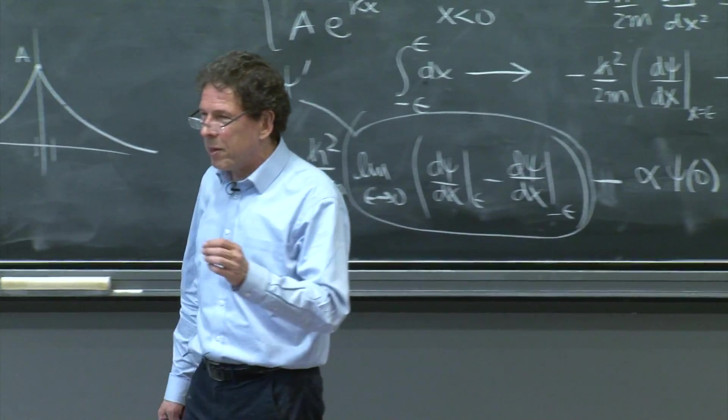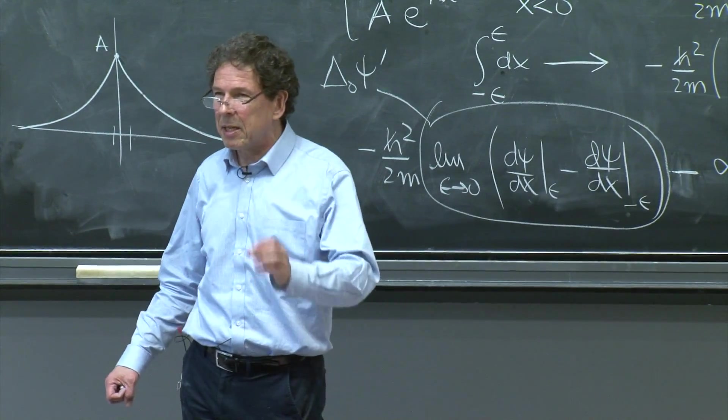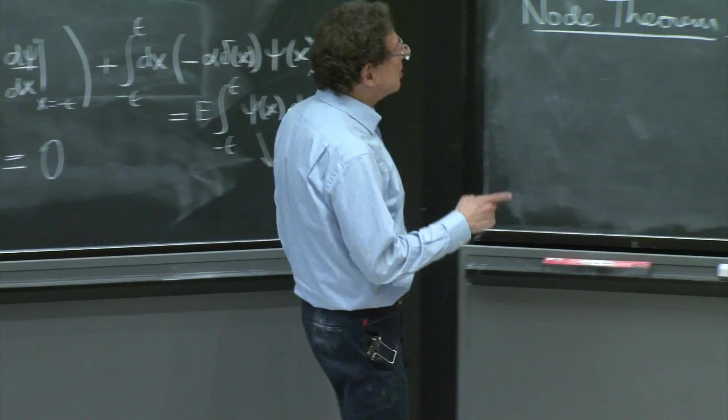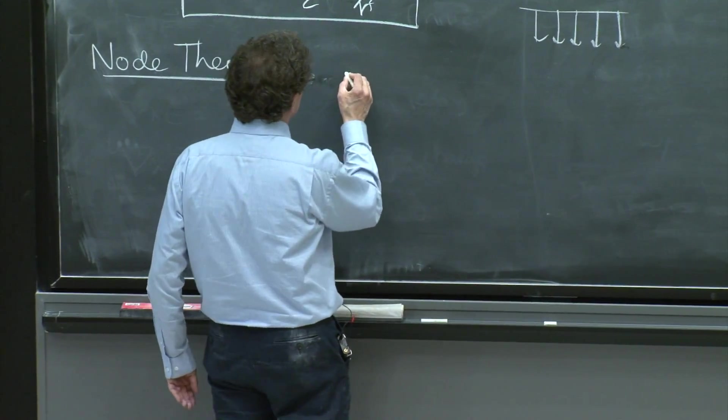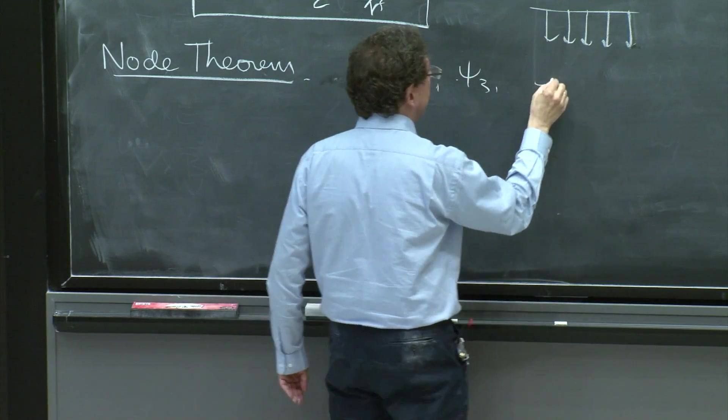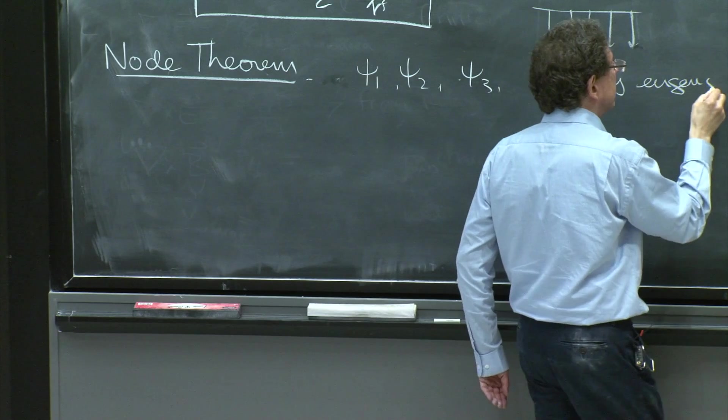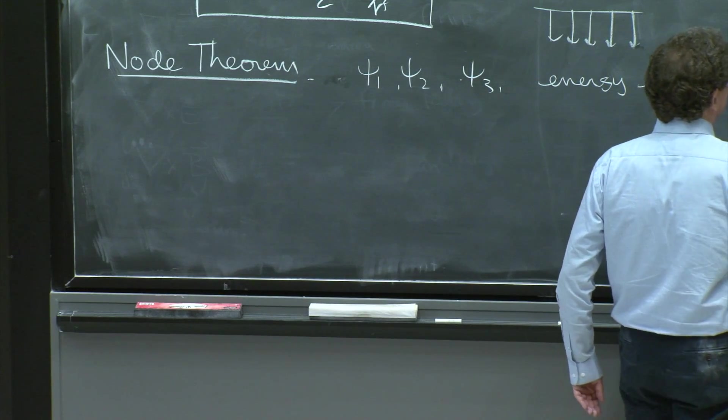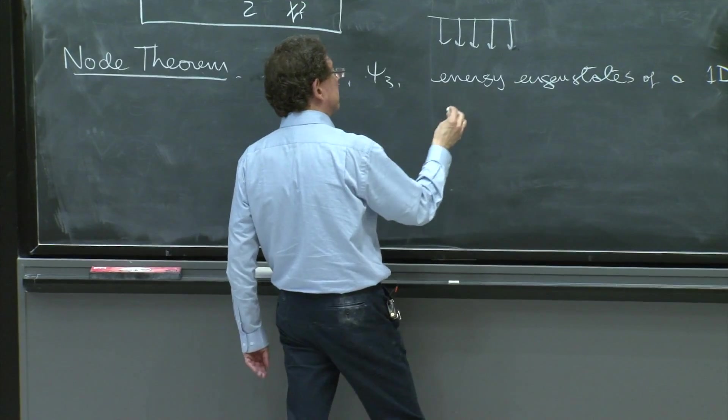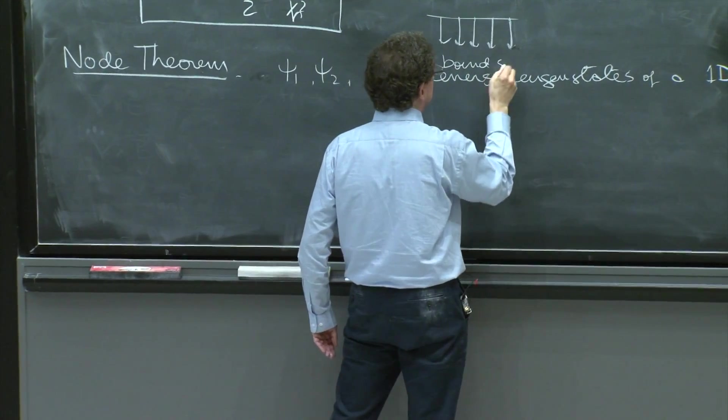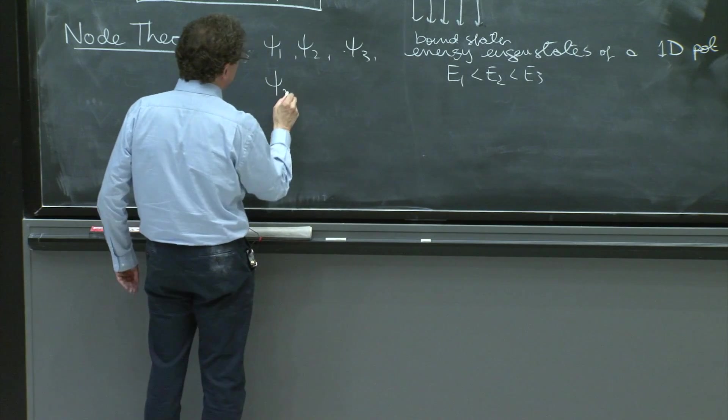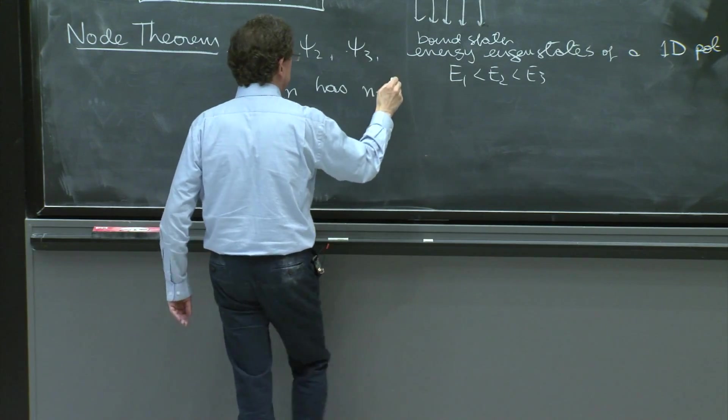This will be an argument that is not mathematically very rigorous, but it's fairly intuitive and it captures the physics of the problem. So it begins by making two observations. In the node theorem, if you have ψ₁, ψ₂, ψ₃, all energy eigenstates of a one-dimensional potential bound states with energy E₁ less than E₂ less than E₃ less than E₄, ψₙ has n minus 1 nodes.